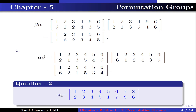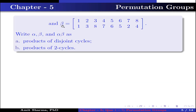Question number 2. Let alpha be the permutation in which 1 has image 2, 2 has image 3, 3 has image 4, 4 has image 5, 5 has image 1, 6 has image 7, 7 has image 8 and 8 has image 6. And beta is the permutation in which 1 has image 1, 2 has image 3, 3 has image 8, 4 has image 7, 5 has image 6, 6 has image 5, 7 has image 2 and 8 has image 4. Write alpha, beta, and alpha beta as: part A, a product of disjoint cycles; part B, a product of 2-cycles.